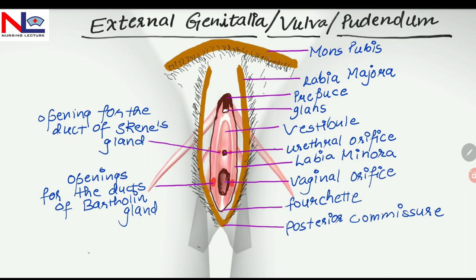Here is the Mons pubis, sometimes referred to as Mons veneris. It is a mound of subcutaneous adipose pad which lies anterior to the pubic bone and is covered with pubic hair, as you can see, along with various sebaceous and sweat glands. The lower part of Mons pubis is divided by a fissure which separates it into the labia majora.